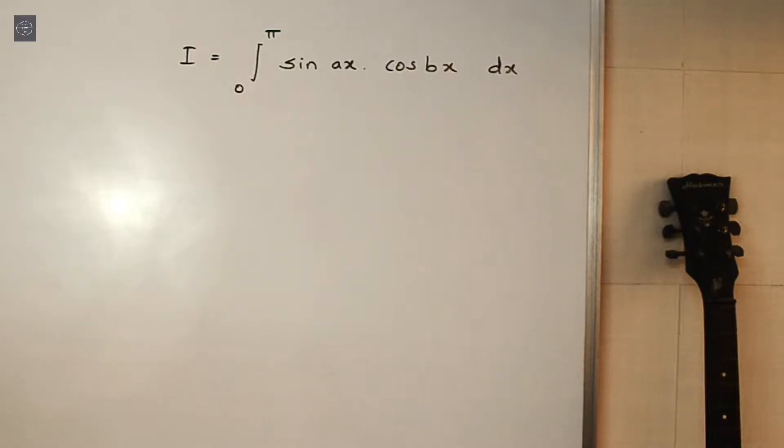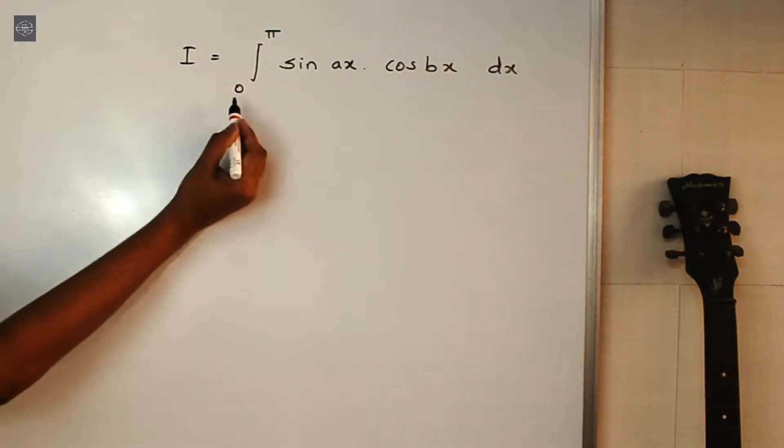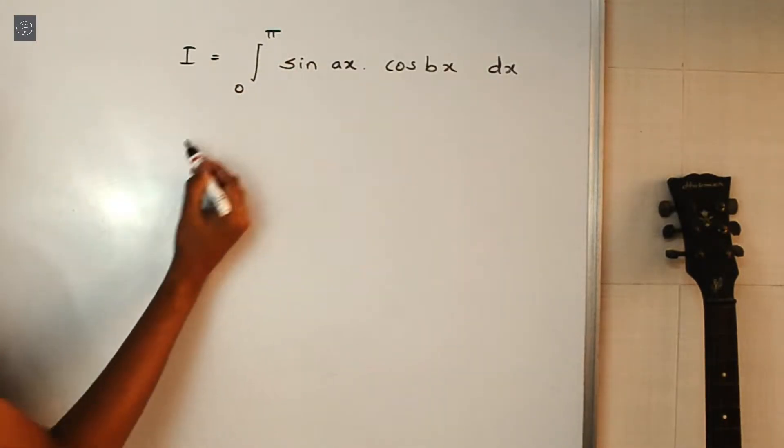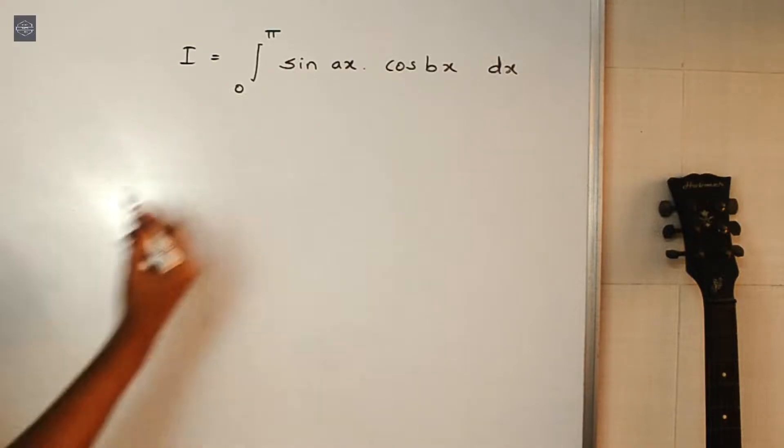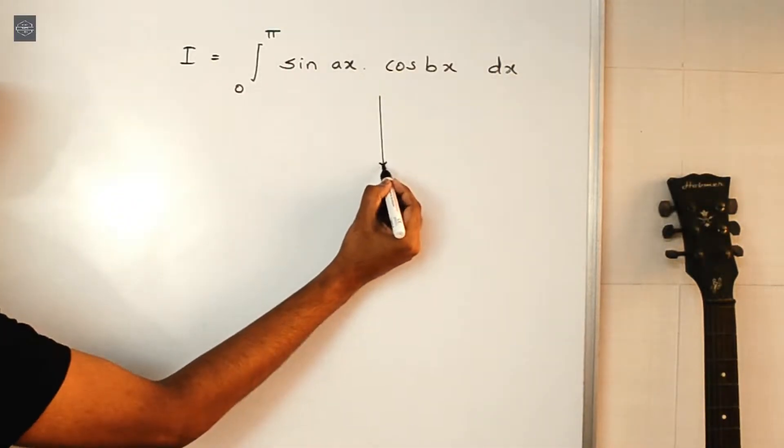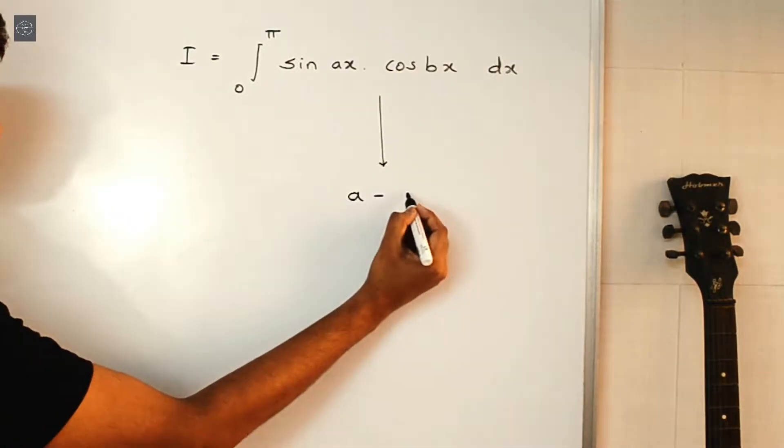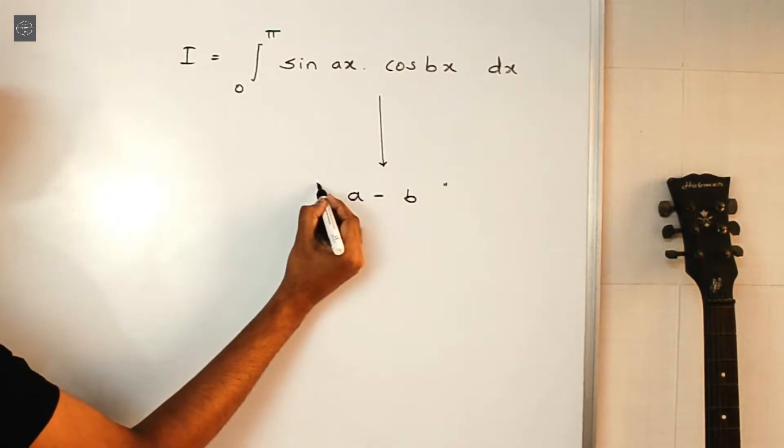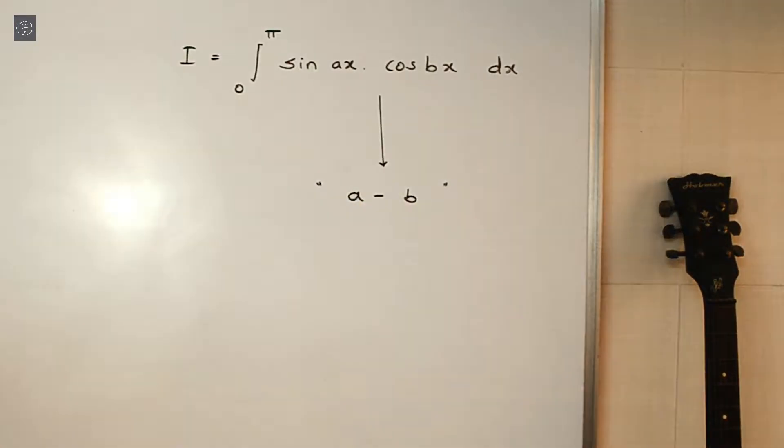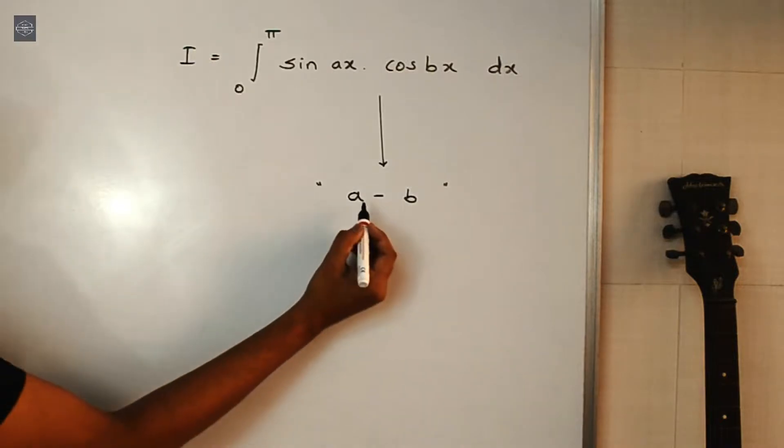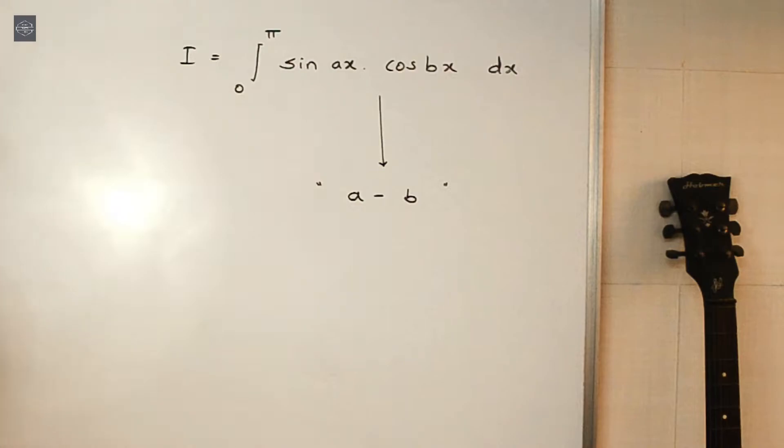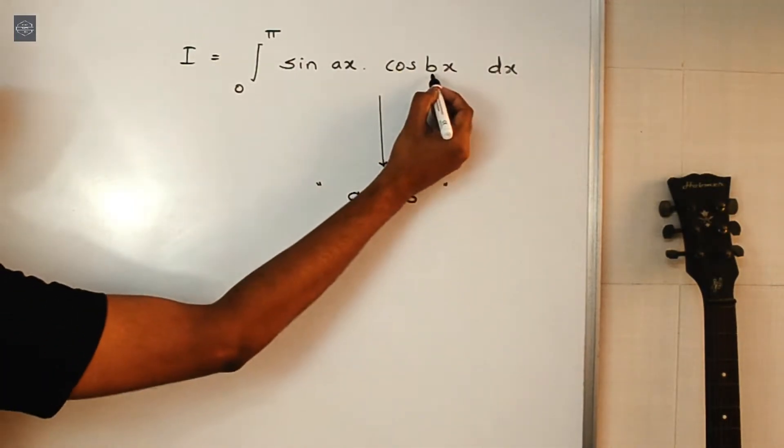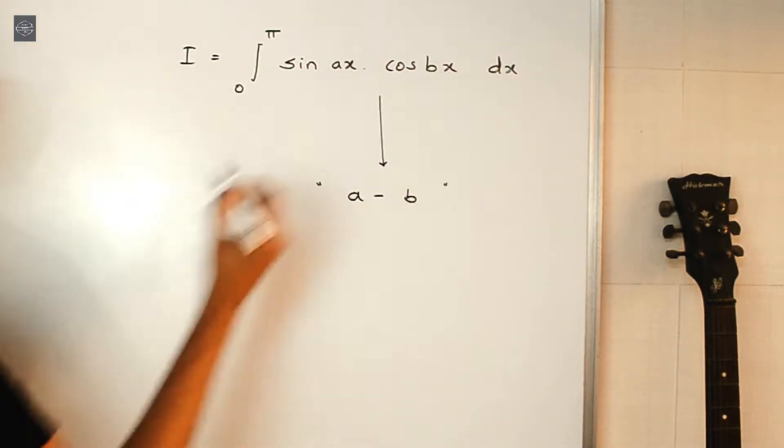Alright, so here we have the trick. See whenever we have integral of the type 0 to π sin ax into cos bx dx. Then here, first of all, you have a-b, a-b, this term's value. And what is this a-b? So here, a is nothing but the value associated with this sin term, and this b is nothing but the value associated with this cos term.